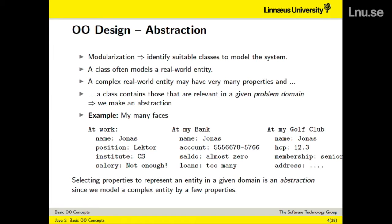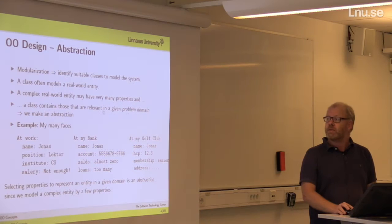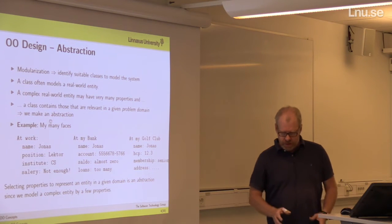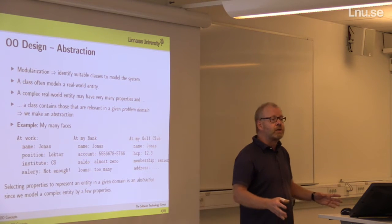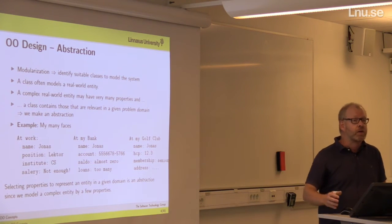What we have to do is say that, in this context at the university, we don't care about your shoe size. There are only a few facts that are relevant: your ID number, what courses you have taken, your grades, and things like this. Out of all your properties, we select perhaps 10 that we consider important to keep track of. This is the abstraction phase. A class contains those properties that are relevant in a given problem domain.